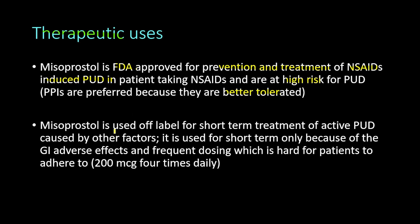Misoprostol is used off-label for short-term treatment of active peptic ulcer disease caused by other factors. It is used short-term only because of gastrointestinal adverse effects in the form of diarrhea and abdominal pain, and because of frequent dosing which is hard for patients to adhere to. The dosing is around 200 micrograms four times daily.